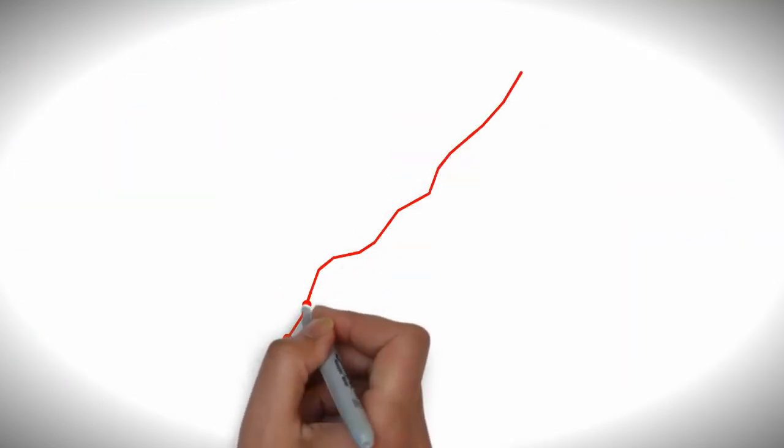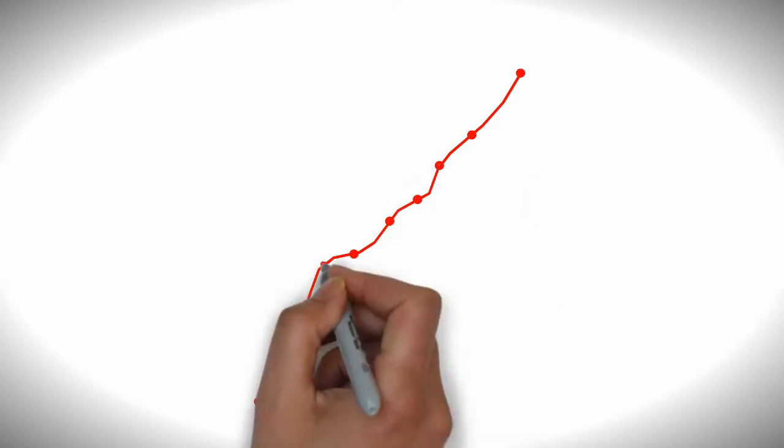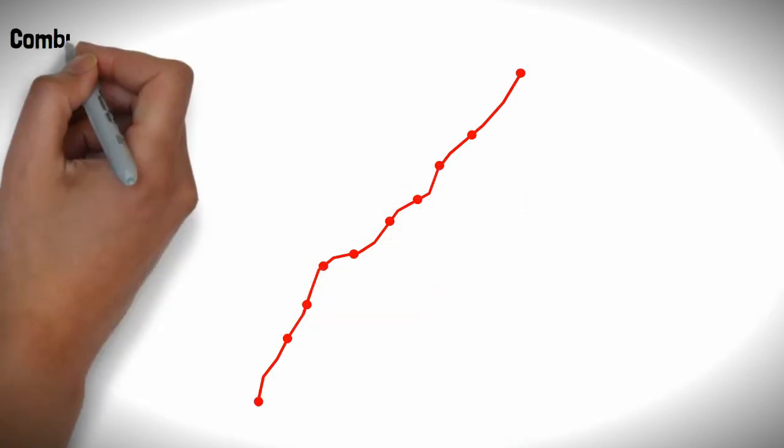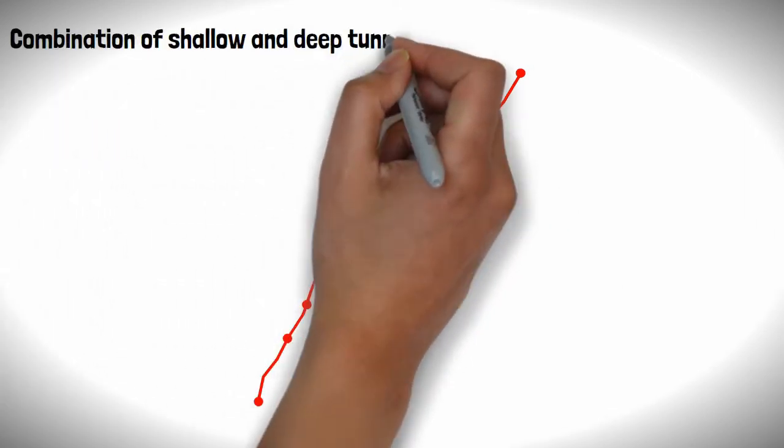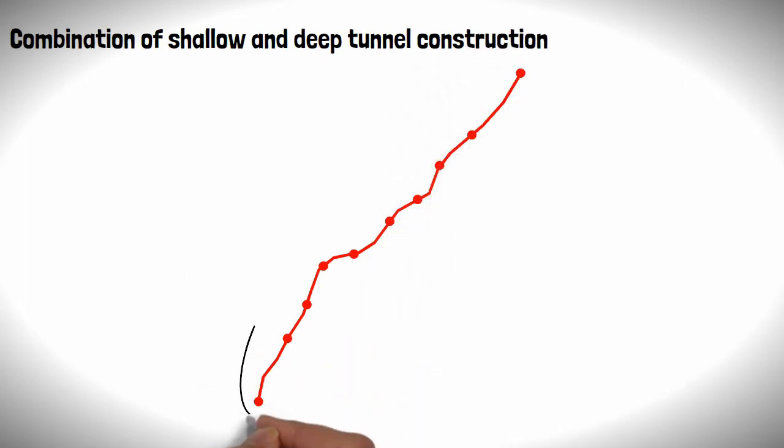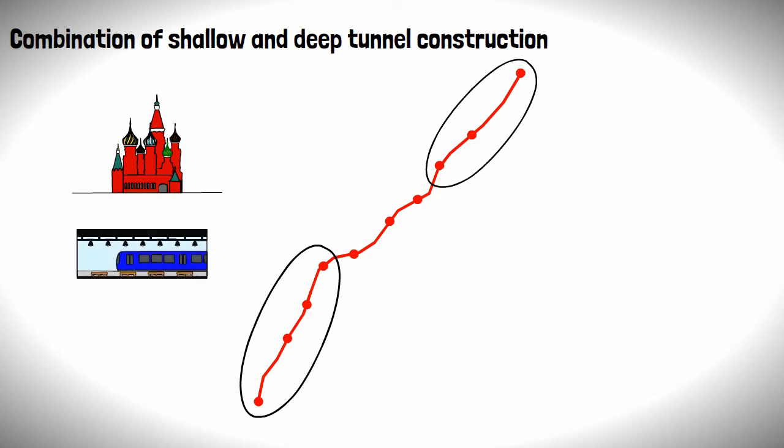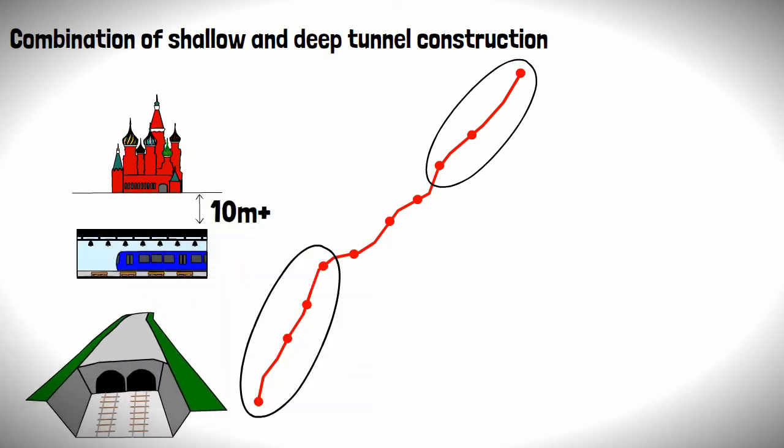The result of these ground conditions coupled with Moscow's topography meant construction for the metro would be a combination of deep and shallow tunnel construction. As the topography varies less on the outskirts of the city center, stations were able to be built shallower using cut and cover, which included both termini of the line.